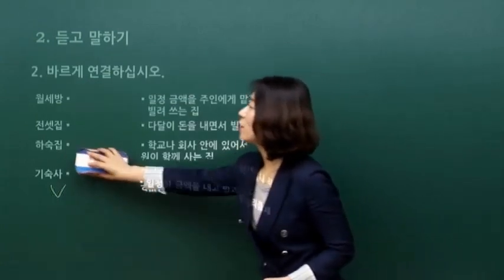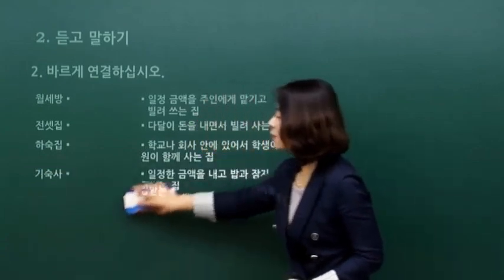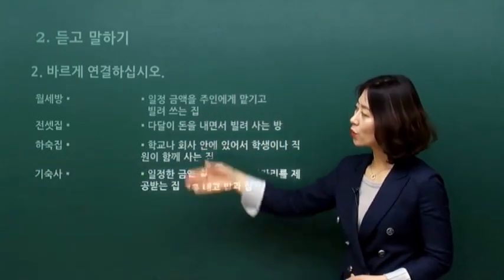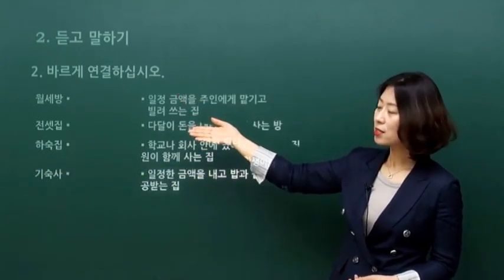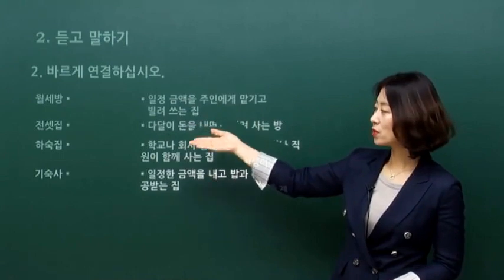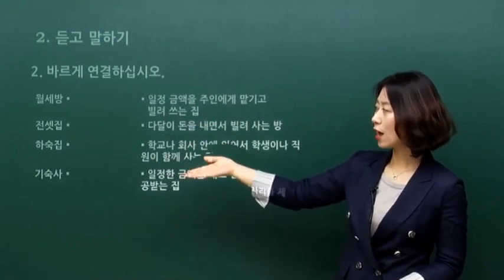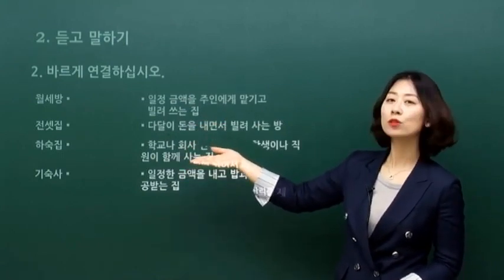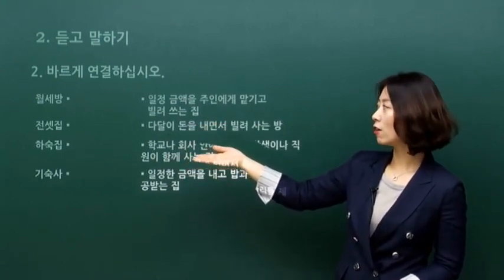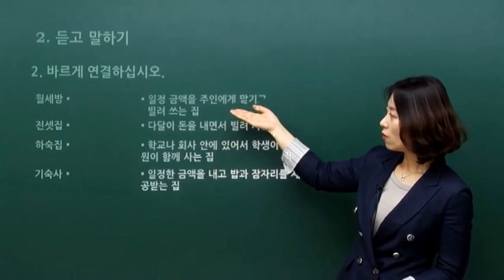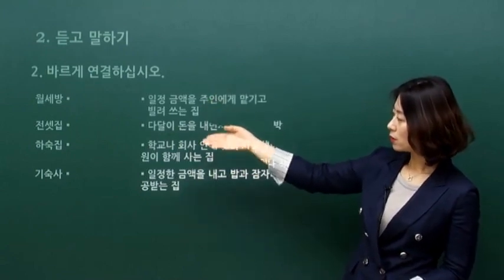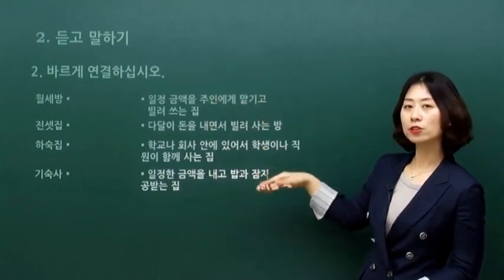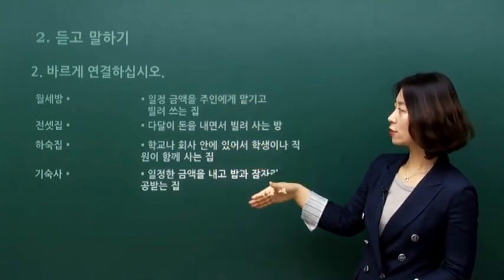그 다음에 두 번째, 바르게 연결하십시오 해서 볼게요. 월세방, 전셋집, 하숙집, 기숙사. 하숙집, 기숙사는 좀 들어보았고요. 저 말들과 설명이 되어 있는 것들을 연결하시는 거네요.